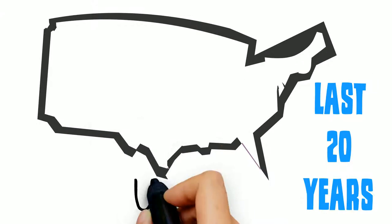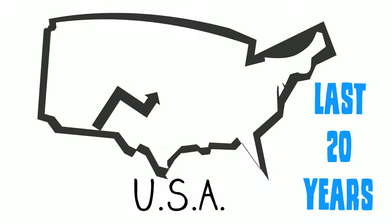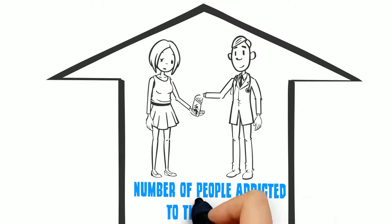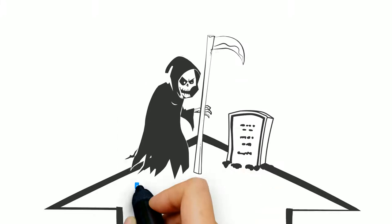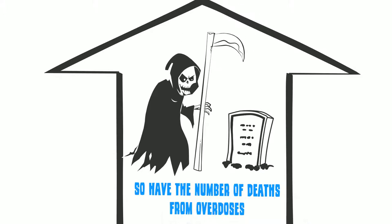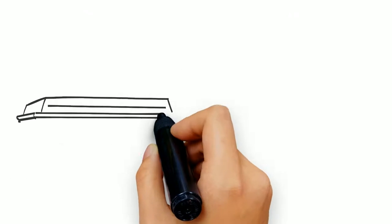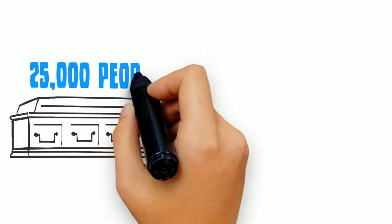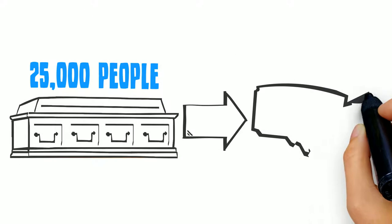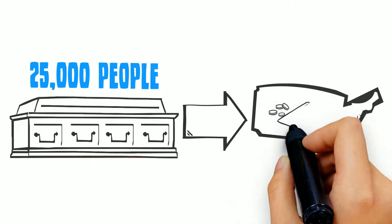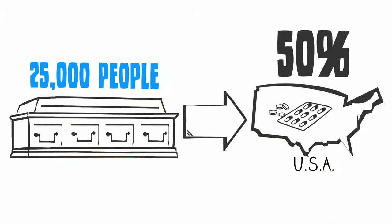In the last 20 years in the United States, the number of prescriptions written for pain pills has soared. So has the number of people addicted to these drugs, and so has the number of deaths from overdoses. At the moment, about 25,000 people die each year in the United States from drug overdoses. More than 50% of these deaths are due to prescription drugs.